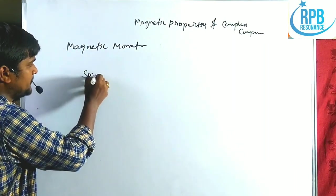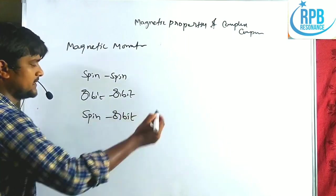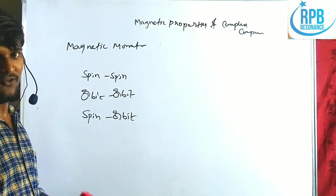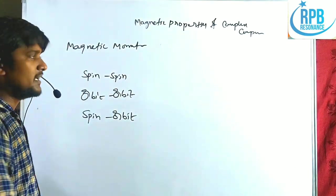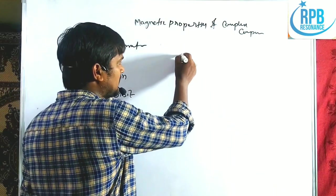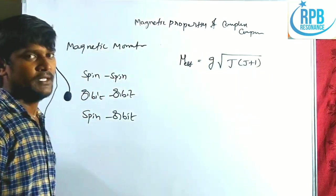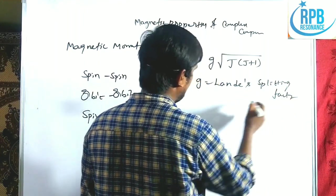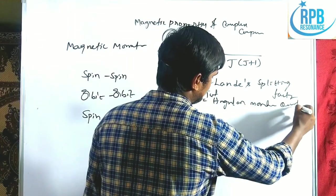We observe three types of coupling in magnetic species: spin-spin coupling, orbit-orbit coupling, and spin-orbit coupling. When a charged species has all three types of magnetic interactions, we use the formula μeff = G√(J(J+1)), where G is the Landé splitting factor and J is the total angular momentum quantum number.